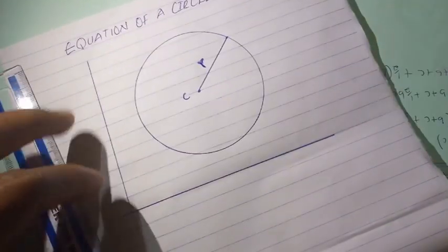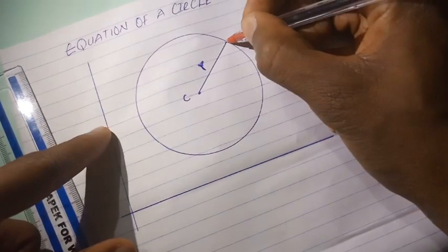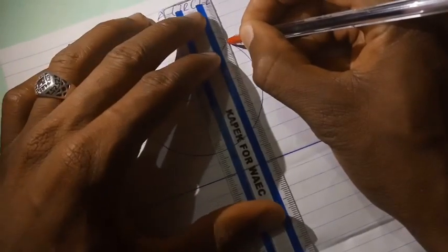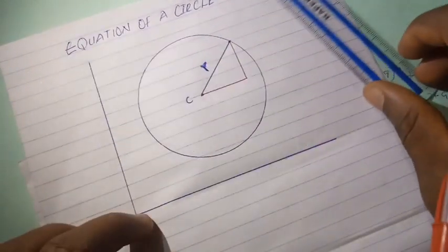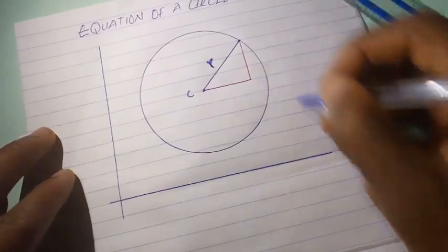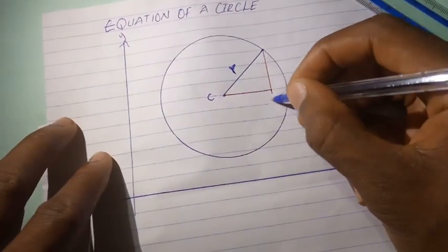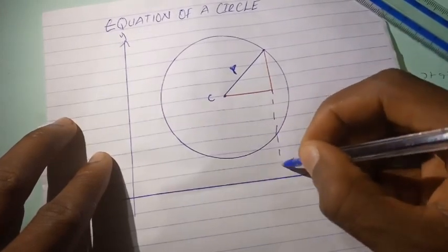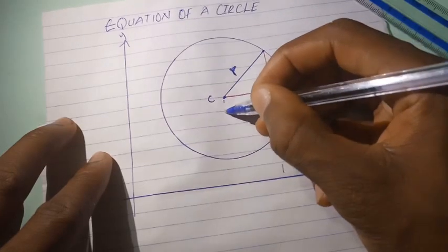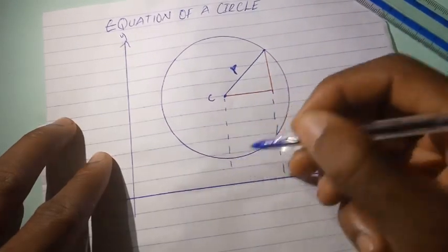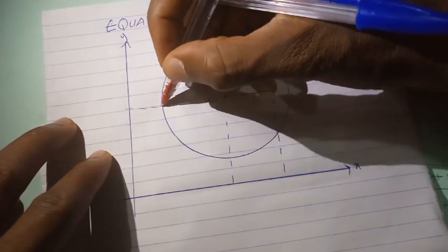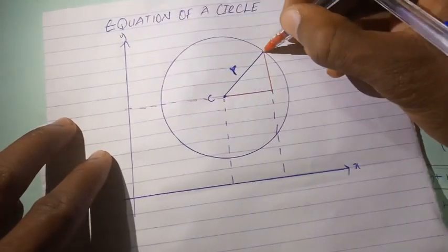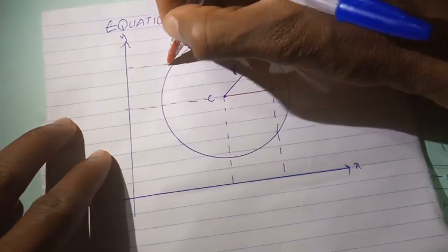Let's add some labels. If we draw a right angle triangle here — extending this line down to the x-axis, this is the x-axis while this is the y-axis — we do the same thing from the center down to the x-axis, and we also draw a line from the center that touches the y-axis.